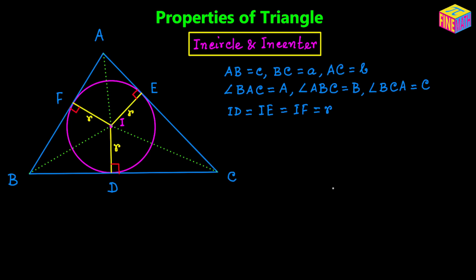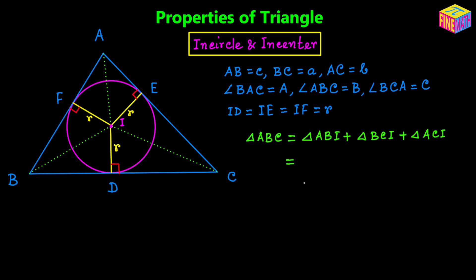Now let's try to establish the relationships. If we think about the area of this triangle, we can consider that the triangle's area would be the sum of the areas of the three small triangles ABI, BCI, and ACI. So we can say that area of ABC equals area of ABI plus area of BCI plus area of ACI.